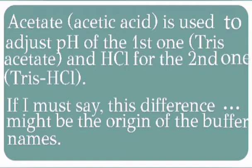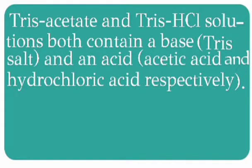Acetic acid is used to adjust the pH of the first buffer, and hydrochloric acid for the second buffer. This difference might be the origin of the buffer names. Tris-acetate and Tris-HCl solutions both contain a base — which is Tris salt — and acetic acid and hydrochloric acid respectively.